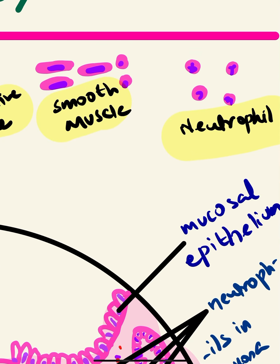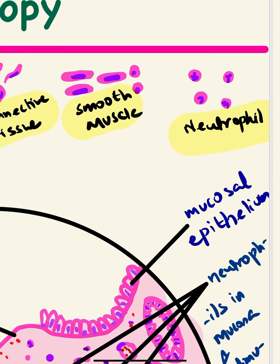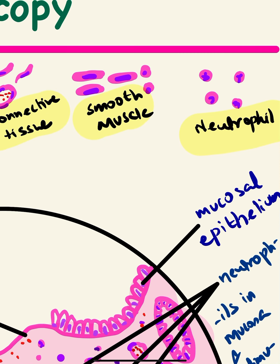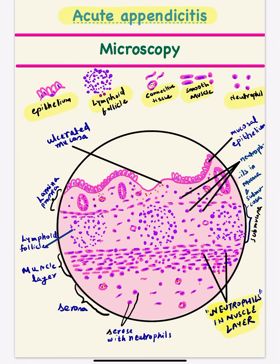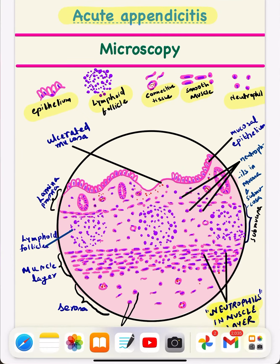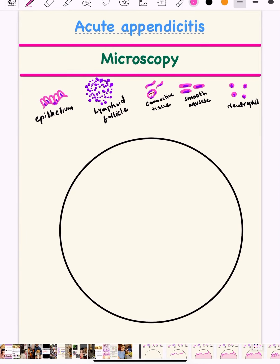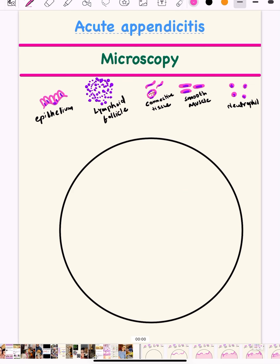Lastly, the neutrophil. To draw a neutrophil, you make the lobed nucleus — you can make three lobes, four lobes, whatever you like — and then you make a small circle around it. This is how the neutrophil looks in histopathology. After knowing all these basics, let us move to drawing the diagram of acute appendicitis.